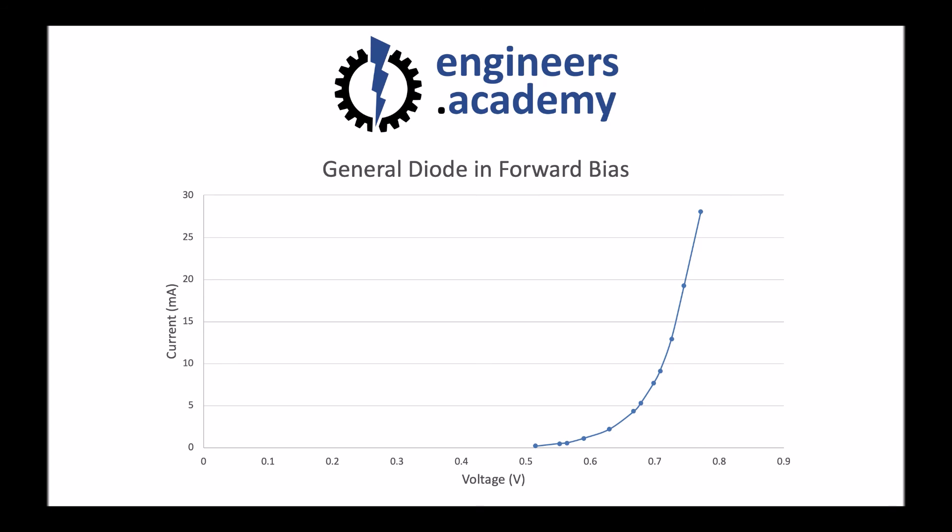This is an example of a non-linear characteristic and is typical of most diodes. For resistive components, we would expect to see a straight line in this instance, where current and voltage are proportional. We'd end up with a diagonal line. But in semiconductors, this non-linear response is more typical.